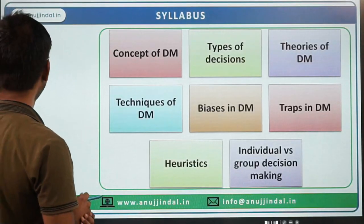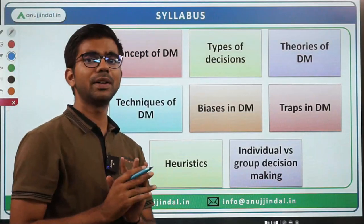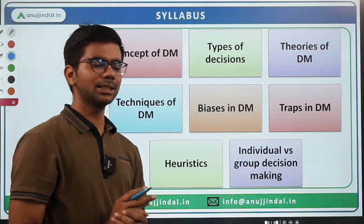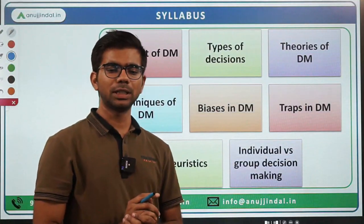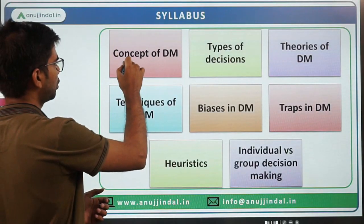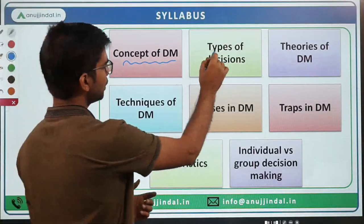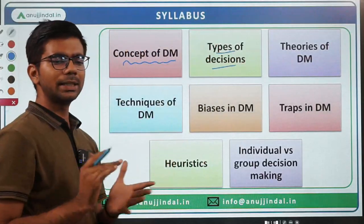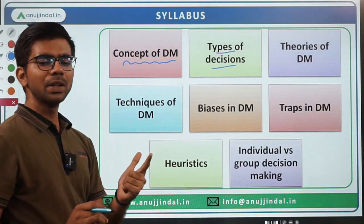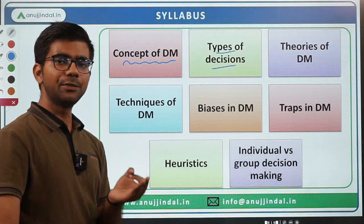By analyzing past year papers, I found that the questions in decision making were not very difficult — some could be answered with common sense. But there are certain technical aspects due to which we have to study the theory. Questions were asked on the concept of decision making: the basics, types of decisions — programmed decisions, non-programmed decisions — and further classification into strategic, tactical, and operational decisions. Various decisions taken by managers, like cognitive-based decisions and value-based decisions, were also asked.